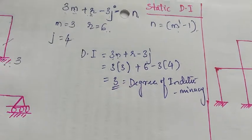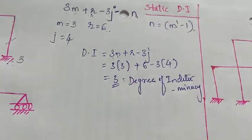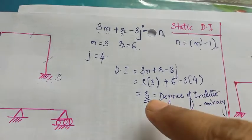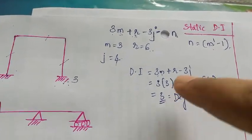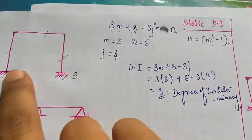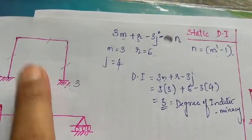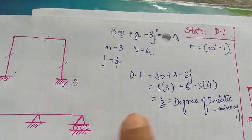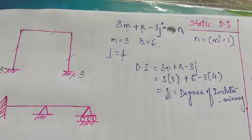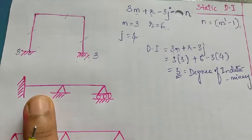If you get 0, it means you don't require any extra equations to solve the problem. This answer of 3 means you require three extra equations to solve this problem. In short, this is not a determinate structure — it is an indeterminate structure to degree 3.